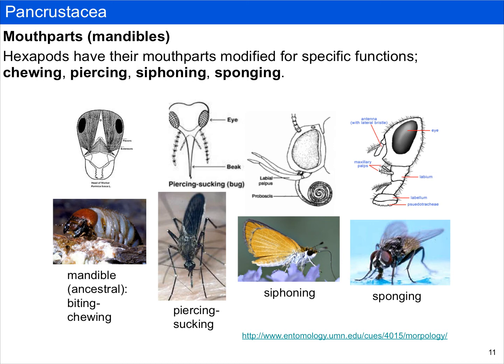One of the distinguishing features of insects is that they have mouthparts specialized to perform specific functions. Their mouthparts are oftentimes referred to as mandibles and they can be modified for chewing, such as in this beetle here. This is oftentimes thought of as the ancestral condition, and there are many modifications thereafter, including a piercing-sucking type of mandible used by things like mosquitoes, a siphoning mandible used to draw in nectar by lepidopterans such as butterflies and moths, and last but not least, a sponging mouthpart most often associated with flies.